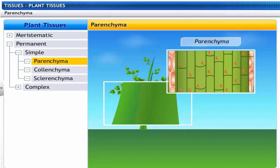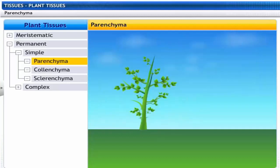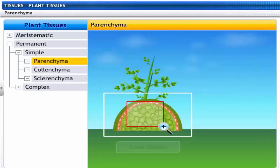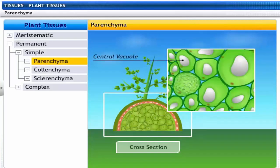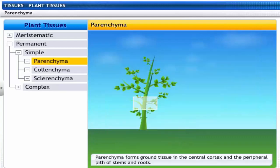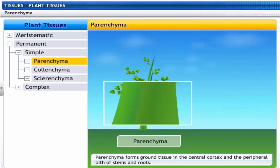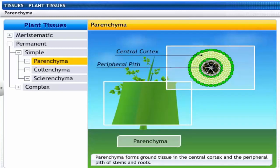Parenchyma are elongated living cells with a cell wall made of cellulose. These cells are polygonal in shape and have a large central vacuole. They also have intercellular spaces between them.